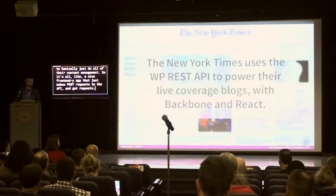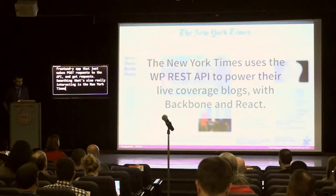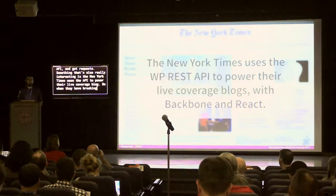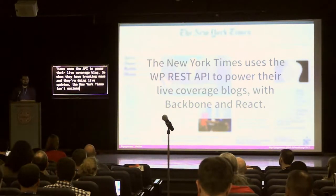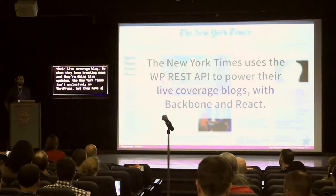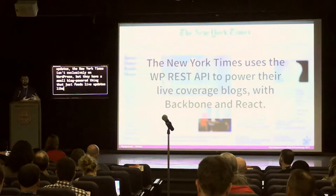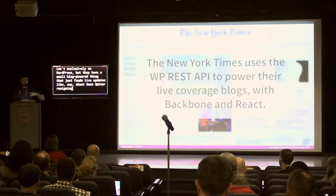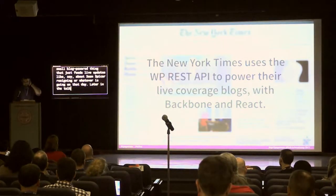Something also really interesting is the New York Times uses the API to power their live coverage blog. When they have breaking news and are doing live updates, they have a WordPress-powered thing that feeds live updates about whatever's going on that day. They use Backbone and React, and I've linked to a really good talk they gave about how to do that.